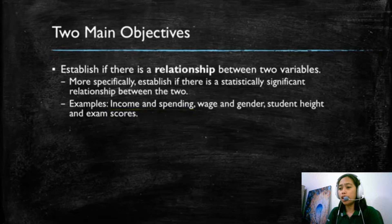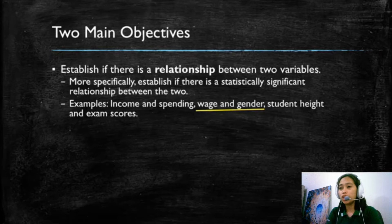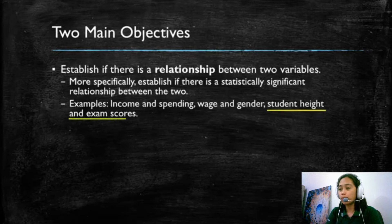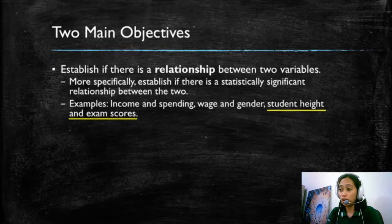We could also analyze and test if there is a relationship between wage and gender. We could ask if men are more likely to earn higher wages than women, in which case we are talking about gender discrimination, which is negative and we don't want it, but we can actually use regression models to test if that relationship exists. Another example that I hope you find odd is the relationship between a student's height and that same student's exam scores. We should expect no relationship to exist and we can use a regression model to test that.